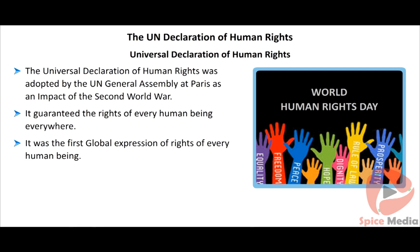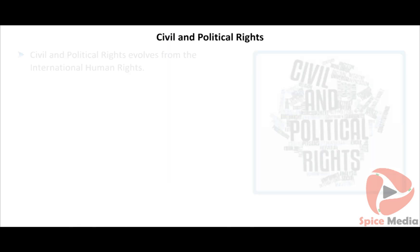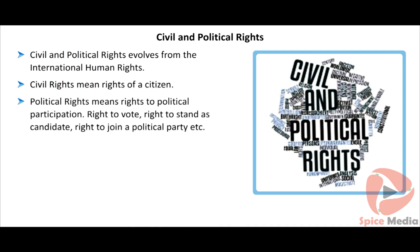The Universal Declaration of Human Rights guaranteed the rights of every human being everywhere. It was the first global expression of rights of every human being. Civil rights means rights of a citizen and is the first right to be recognized — it is the rights of an individual by virtue of being a citizen. Political rights means rights to political participation: the right to vote, right to stand as a candidate, and the right to join a political party.